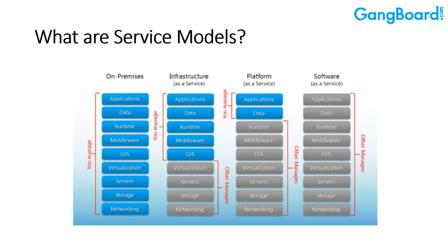Before the cloud, there were on-premise environments in which the entire infrastructure — from networking all the way to the applications being deployed — was handled by the organizations themselves. But with the coming up of cloud, you get Infrastructure as a Service, Platform as a Service, and Software as a Service. These are the three basic service models by which the cloud provides users with its services.